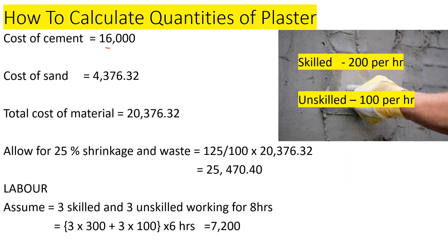The total cost of materials is the cost of cement plus the cost of sand: 16,000 plus 4,376.32, giving us 20,376.32 shillings. We then allow for 25% shrinkage and wastage, bringing the adjusted material cost to approximately 25,470.40 shillings.